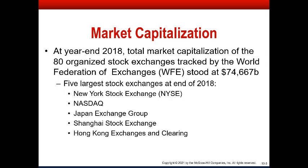Where does most of the wealth in the world exist? It exists in the world's greatest companies. The five largest exchanges are going to be mostly in the U.S. and then China. We've got the New York Stock Exchange and NASDAQ in the U.S., Shanghai and Hong Kong in China, and then Japan. So the biggest economies, not surprisingly, have the biggest stock markets with the most companies listed and the most market capitalization.